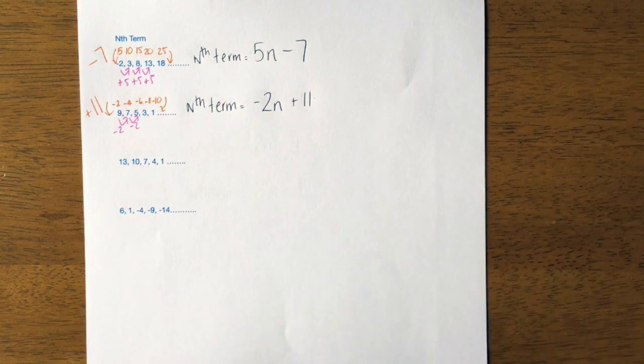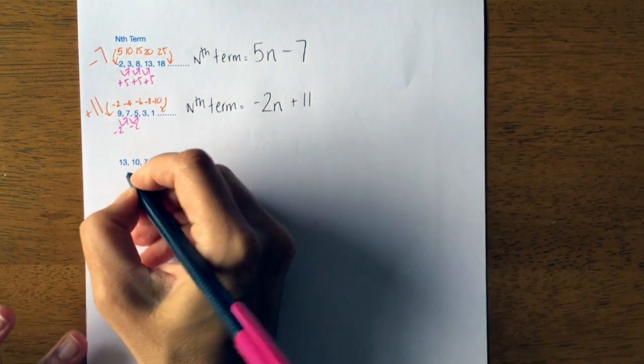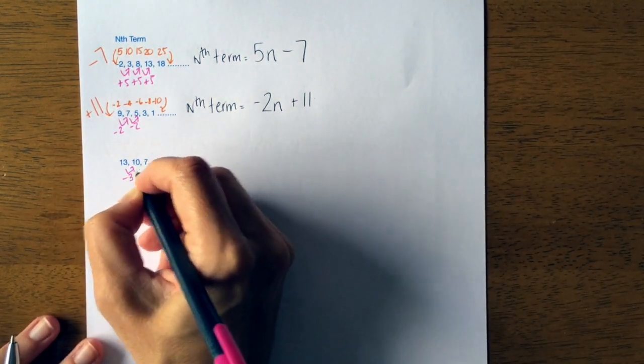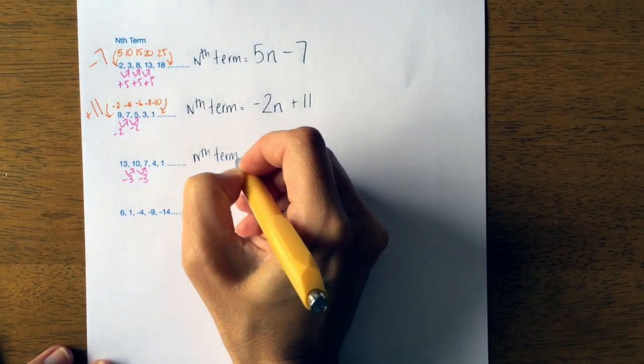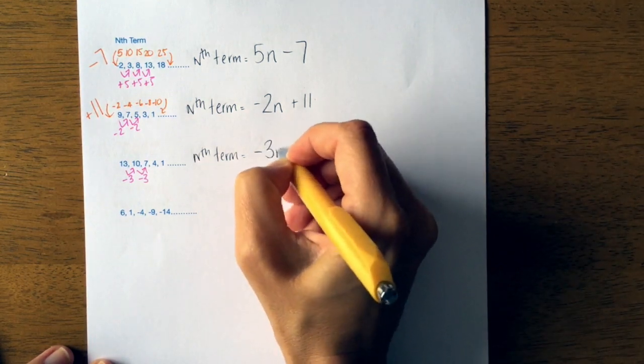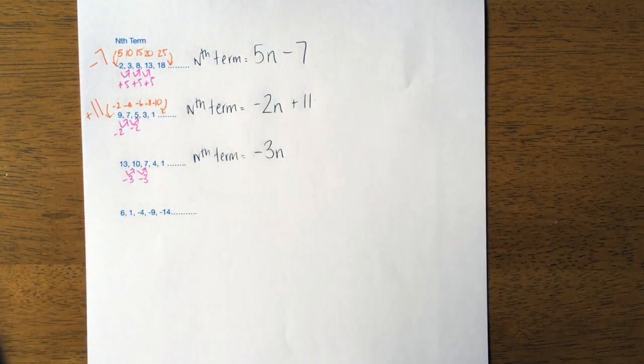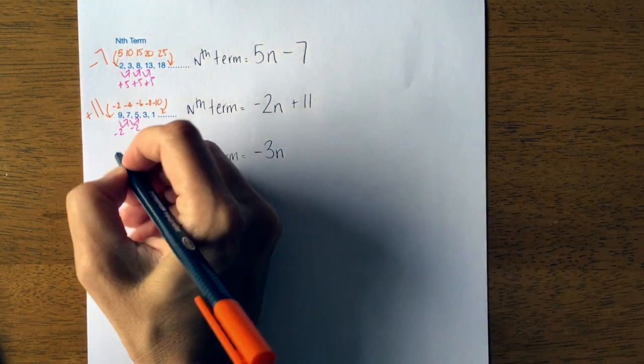Let's do another one. The next one is going down in 3s. So my nth term is going to start with negative 3n, and I'm going to compare it to my negative 3 times table.